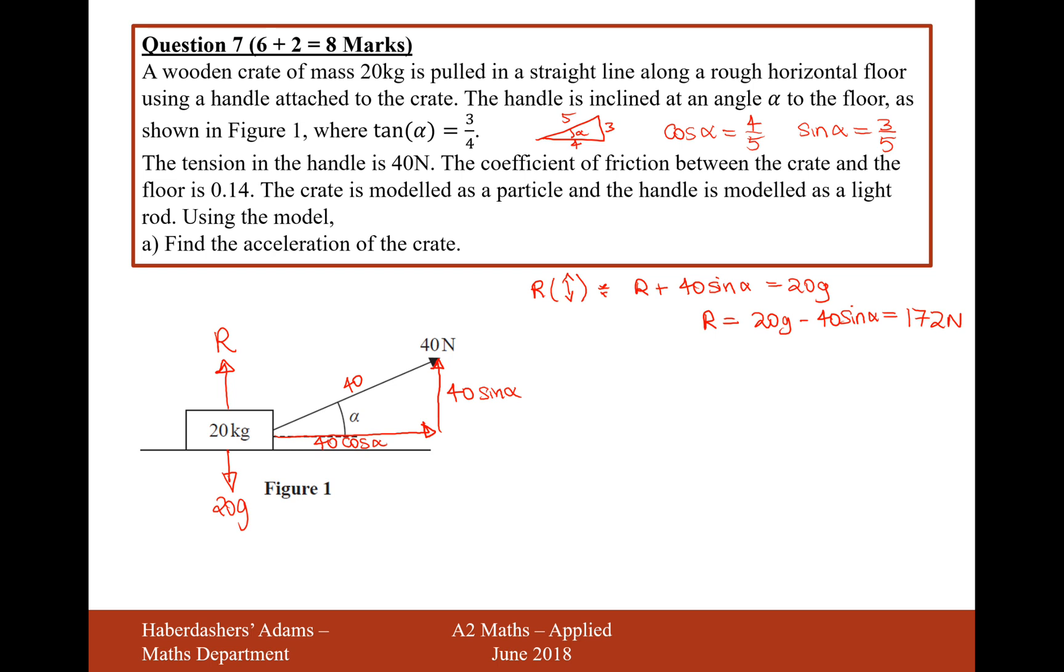So the reaction force between the ground and the particle is 172. And what you might be thinking is, why have I worked that out? Because there is evidently friction in this model. Now the frictional force will be acting in the opposite direction to acceleration or the opposite direction to movement. So the friction is going to be acting to the right. And the formula for friction is equal to μ times R.